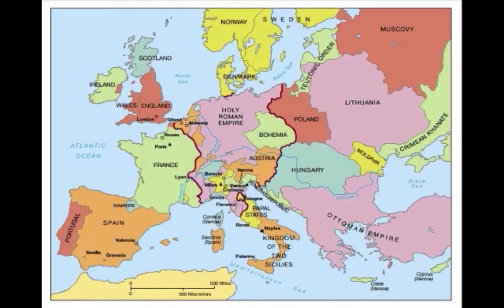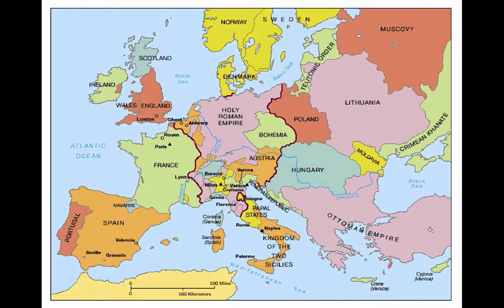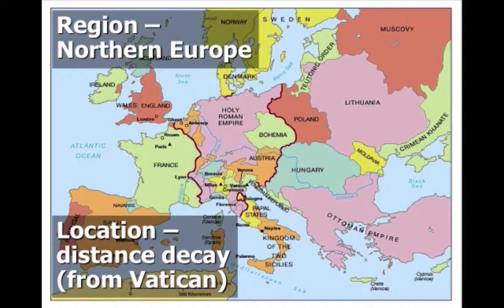The next theme is movement and the diffusion of ideas through Gutenberg's printing press. And that brings us to another theme — region. Northern Europe was strongly influenced by the Northern Renaissance, as well as its emphasis on reform and religion. The theme of location also helps explain why this event happened where and when it did. Because the Holy Roman Empire was located relatively distant from the direct influence of the Vatican and Rome, this relates to the concept of distance decay — that distance actually separates. The church had more control in lands closer to its home base and less control in lands further away.